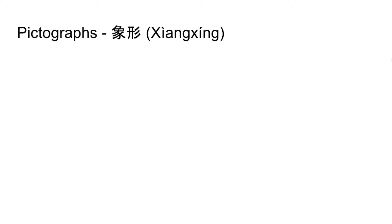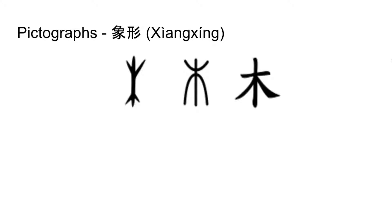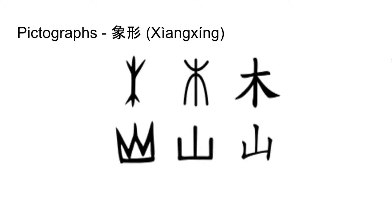The first Chinese characters created, and perhaps the most iconic, were pictographs, or Xiangxing. These are characters which literally represented a facet of the physical world through drawing. For example, the character for tree, Mu, evolved from a crude picture of a tree, and the character for mountain, Shan, originated from a rudimentary drawing of a mountain.